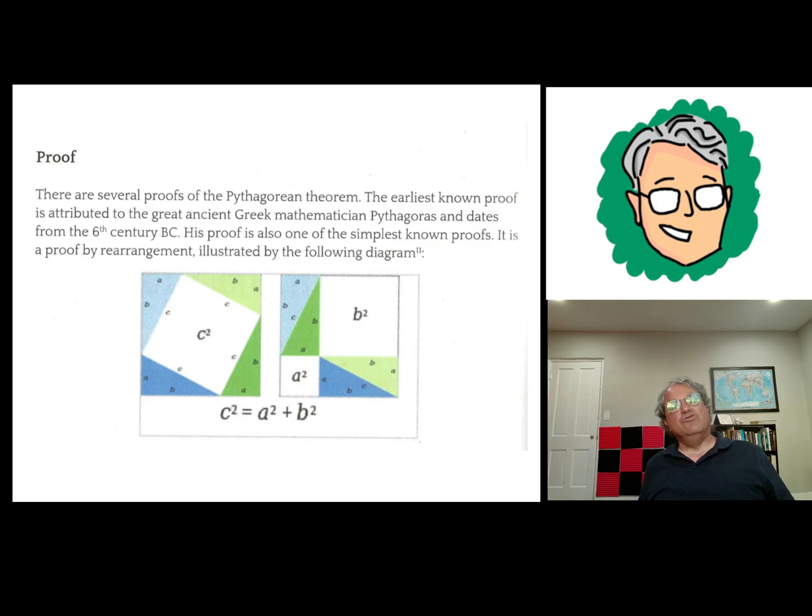And before, the white area was C squared, but now look at it. It's A squared plus B squared. So that's another way to prove that A squared plus B squared equals C squared. Pretty nice I think. You could even make an actual model of this, you know. So that's a very simple proof without words of the Pythagorean theorem. I think that's a very nice proof. I think it's my favorite proof.